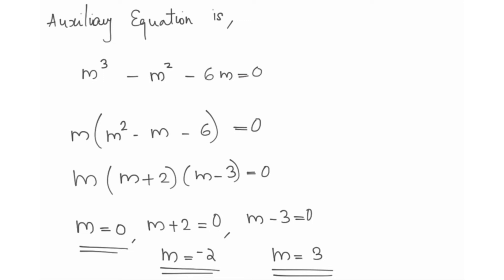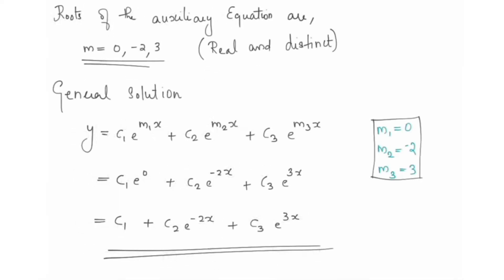The values of m are 0, minus 2, and 3. These roots are real and distinct. The general solution has M1=0, M2=-2, M3=3. So y equals c1·e raised to 0 plus c2·e raised to -2x plus c3·e raised to 3x, which simplifies to y equals c1 plus c2·e raised to -2x plus c3·e raised to 3x. This is the general solution.